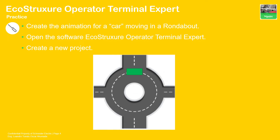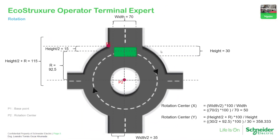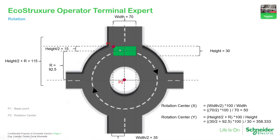What we're going to do is make a movement of a car in a roundabout — so we can go around this part. We're going to open the EcoStruxure Operator Terminal Expert and create a new project to see this. The idea is to place the object in the middle or in some place, imagine that this is a car, take the base point and check the rotation center, and then make the calculation.